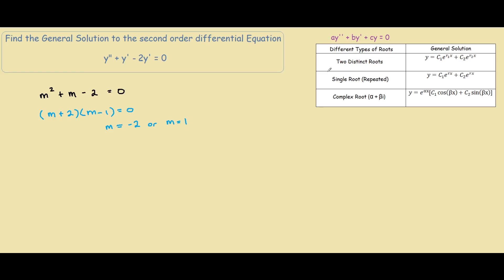If we look up here at our table, I've written this down, there's only three types of roots. We have two distinct roots which is the case that we have here, or we can have a repeated root or a complex root. So in this case we have two distinct roots. We look at the general solution.